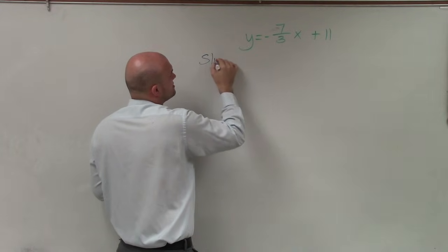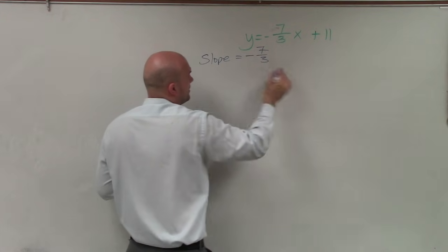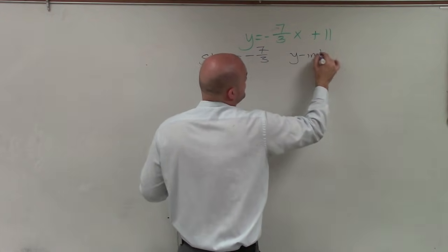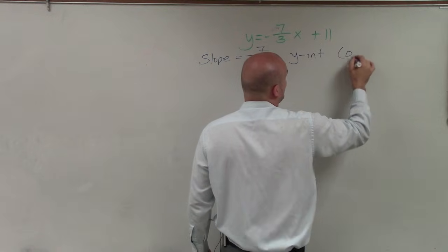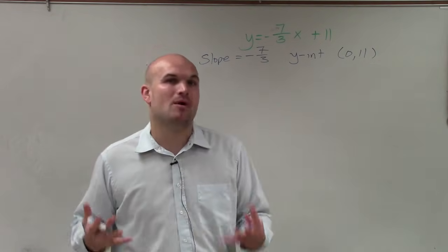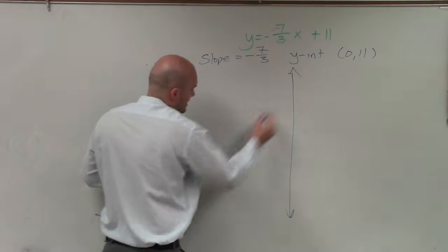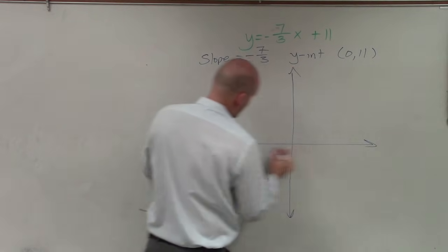So I'm just going to rewrite these. Slope, which is equal to negative 7 thirds. And then the y-intercept, I always like to write as a coordinate point, which is 0 comma 11. Because remember, we're going to be plotting that y-intercept. So it's very important for us to know where that's going to be. So I have my y-axis, and then my x-axis.